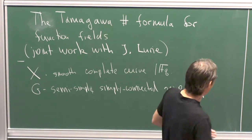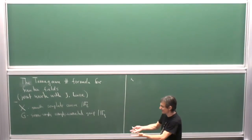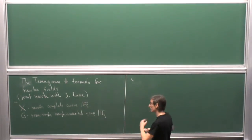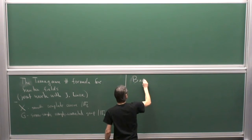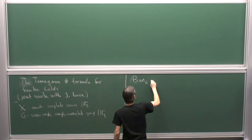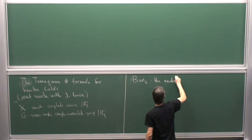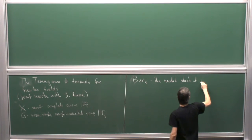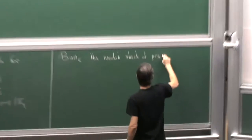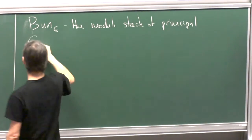I'll present the formula in geometric terms — not the classical way one presents the Tamagawa number formula. We consider BunG, the moduli stack of principal G-bundles on the curve.